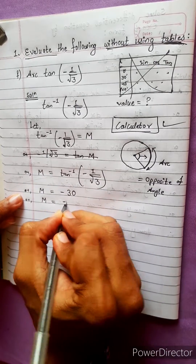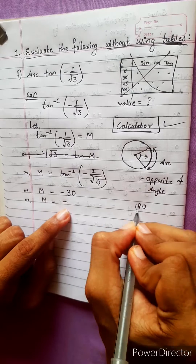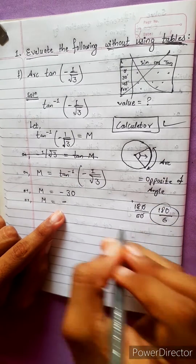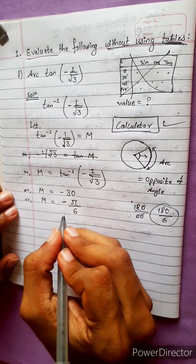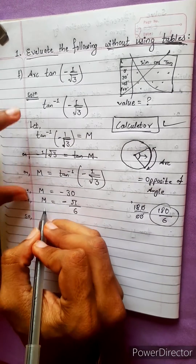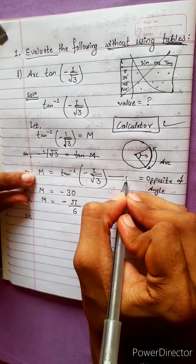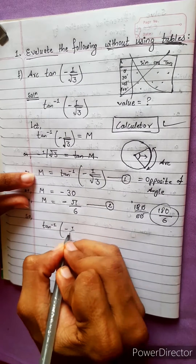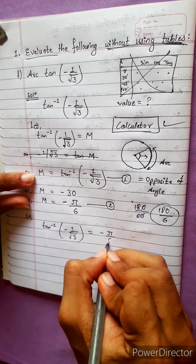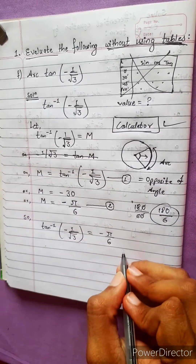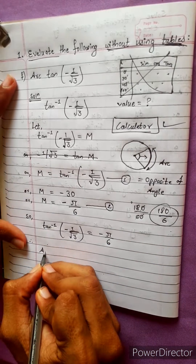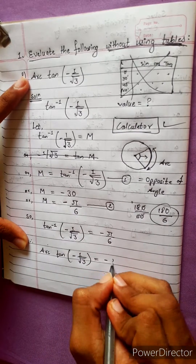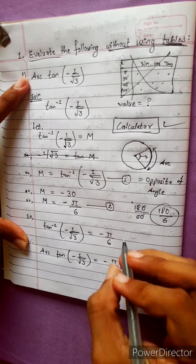m equals minus 30 degrees, which means minus 30 degrees equals minus 180 by 6, which is minus pi by 6. So tan inverse of minus 1 upon under root 3 equals minus pi by 6. That is the answer.